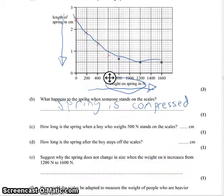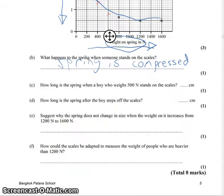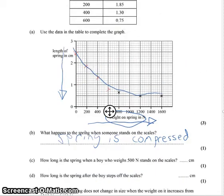How long is the spring when a boy who weighs 500 Newtons stands on the scale? So we need to go to 500 Newtons on our graph, which is just about here, and we need to move up until we hit it and across.